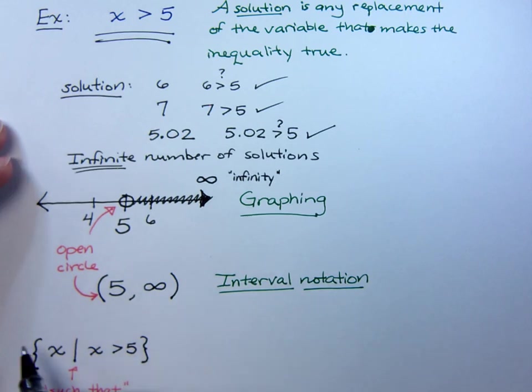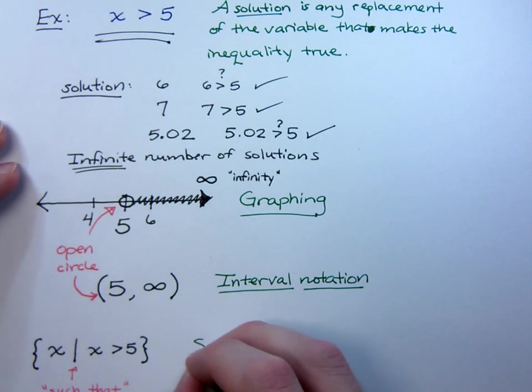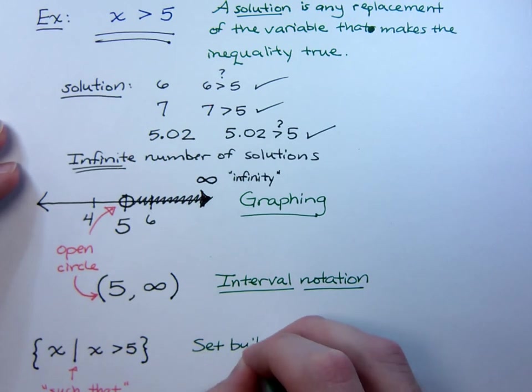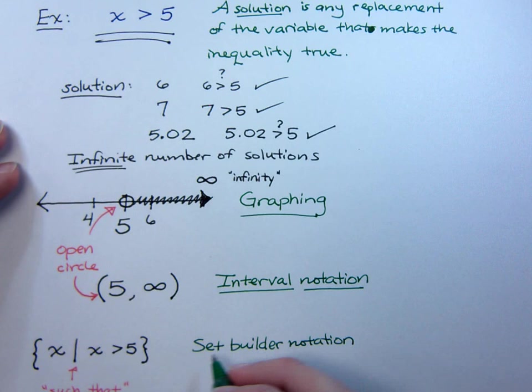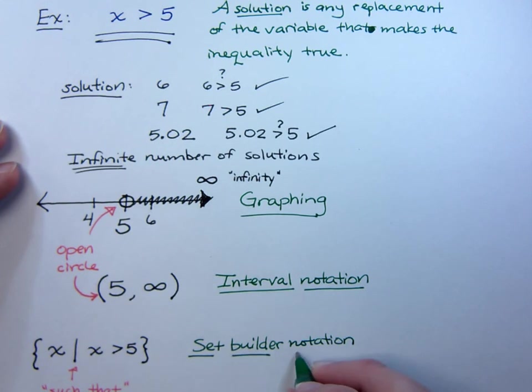So, what this is, it's just a set, it's a collection of numbers. Of all the x's, under the condition that x has to be greater than 5. That is the way that we can express our solution using what we call set builder notation. We're going to see set builder notation come into play again in chapter 7.